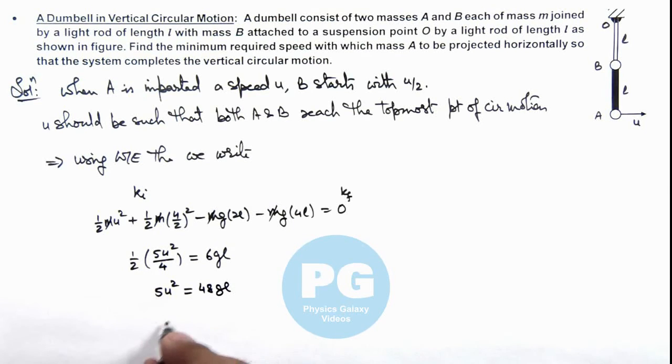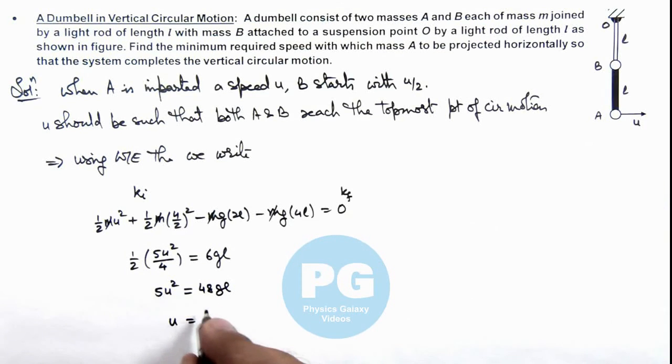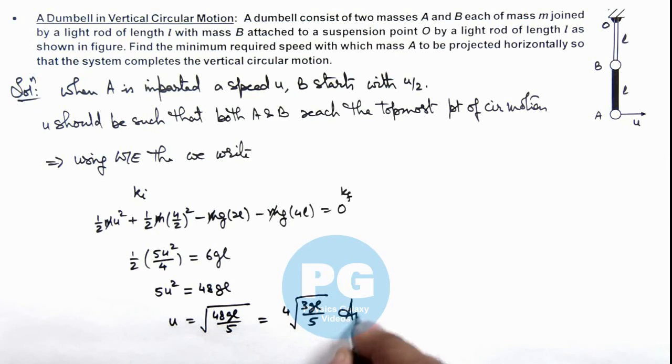The value of minimum speed which is to be given to A for which it will reach the top will be √(48gl/5), which can be further simplified as 4√(3gl/5). That will be the result of this problem.